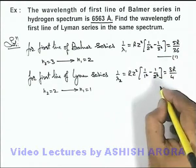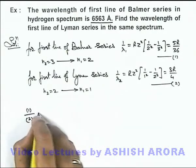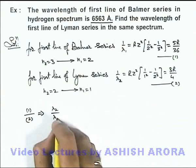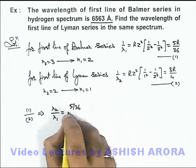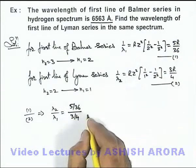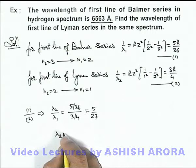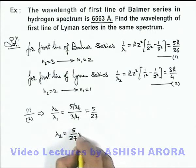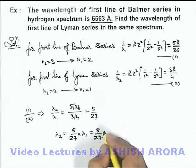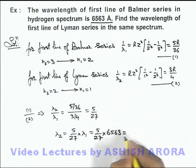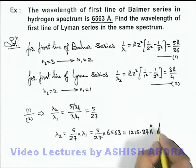Taking the first equation and the second equation and dividing equation 1 by equation 2, we get λ2/λ1 = (5/36) ÷ (3/4). The value of R cancels out, giving 5/27. So λ2 = (5/27) × λ1 = (5/27) × 6563 angstrom. On simplifying, we get 1215.37 angstrom, which is the answer to this problem.